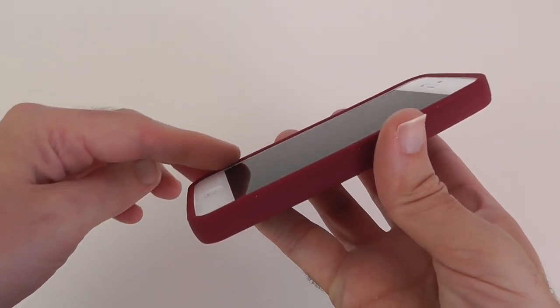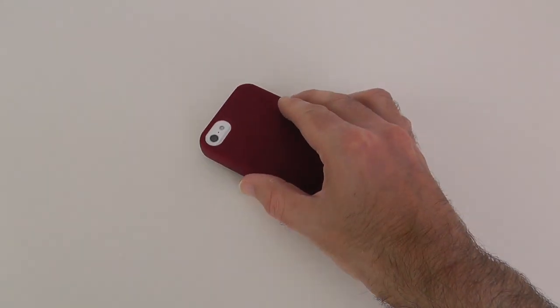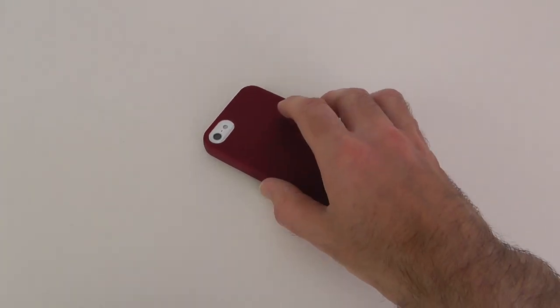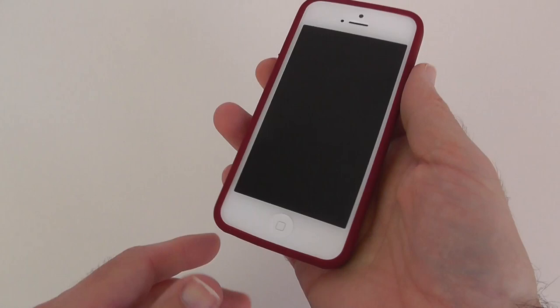Round on the front we've got a raised edge profile here so when you put your iPhone 5 on a table or desk the actual screen isn't going to touch the surface you're placing it on.